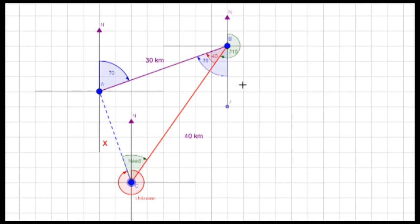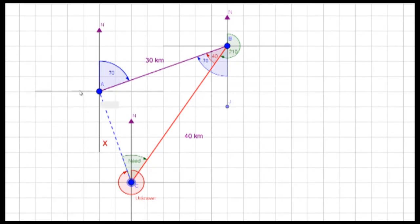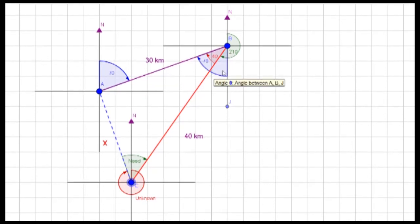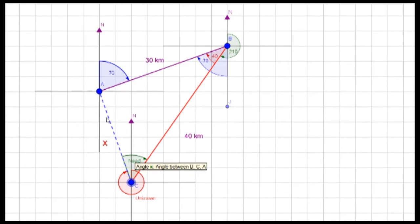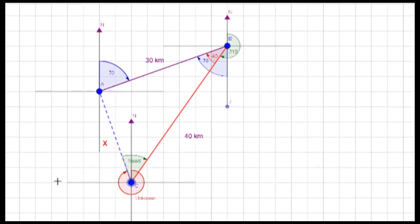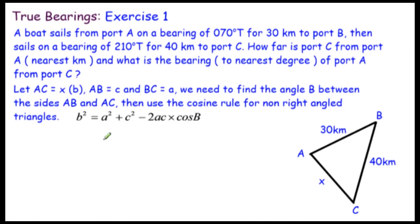In GeoGebra the bearing from B to C is 210 degrees. Since the north-south line is straight (180°), we go 30 degrees past 180 to reach 210. Also, since the north lines are parallel, the 70-degree angle at A is alternate to a 70-degree angle at B. So the remaining angle at B is 210 minus 70 minus 100... that is, 30 + 70 gives the included angle B = 40 degrees — essential for the cosine rule.